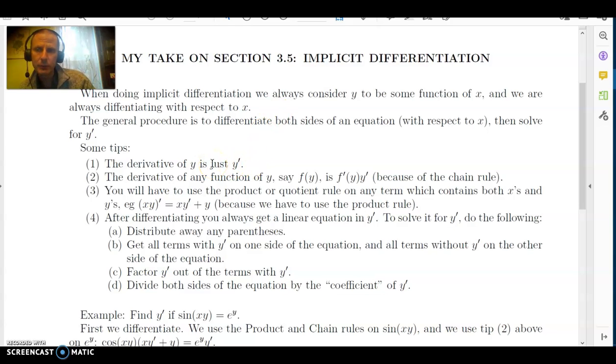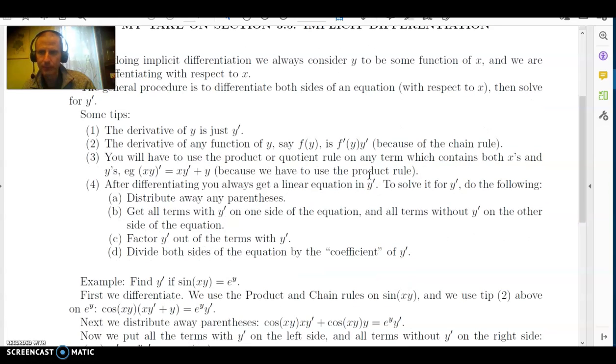So some tips to keep in mind when you try to do this is that the derivative of y is always just y prime. By the chain rule, any derivative of a function of y, say f of y, is f prime of y times y prime. If you start mixing and matching x's and y's, then you're going to have to do things like the product or quotient rule. So for example, if you had x times y, and you just had to take the derivative by the product rule, it's x times the derivative of y, which is y prime, plus the derivative of x, which is 1, times y.